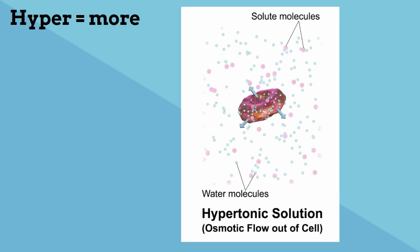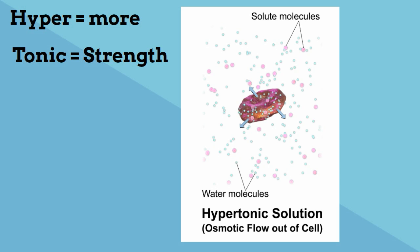Hypertonic — 'hyper' means more; think of it as being hyper means you have more energy. 'Tonic' means strength. So with hypertonic, you have more solute on the outside of the cell, therefore less water. The concentration of water is lower outside the cell, so water flows from high to low and the cell will shrink.